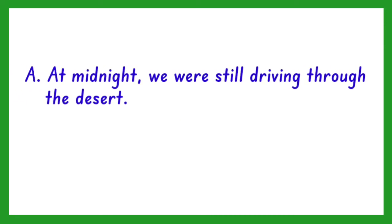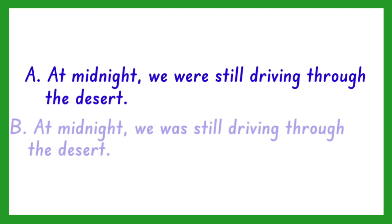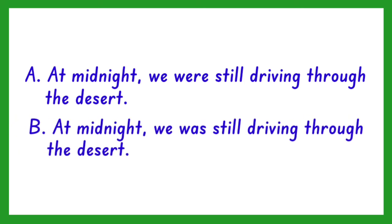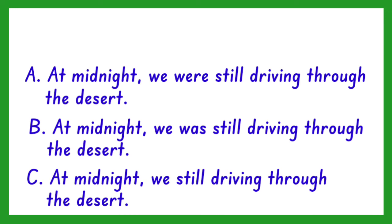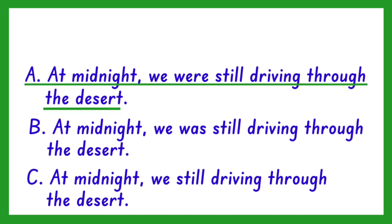Next. A: At midnight, we were still driving through the desert. B: At midnight, we was still driving through the desert. C: At midnight, we still driving through the desert. The answer is A, because the subject is plural — we — so the verb to be should be were, not was.